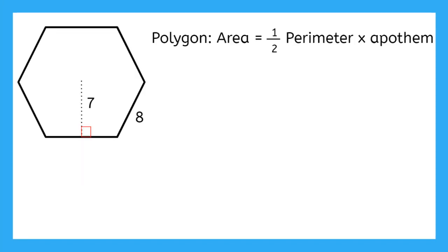So let's find the area of this regular polygon together. Here I have my formula. Area equals 1 half times the perimeter times the apothem. Now I already know my apothem here. It's that distance at a right angle to the center. So this is going to be 7.